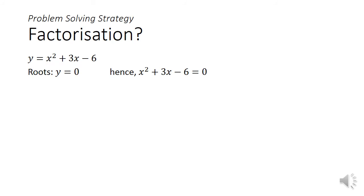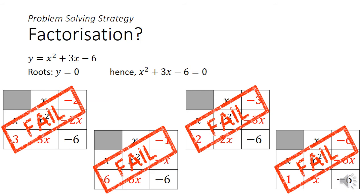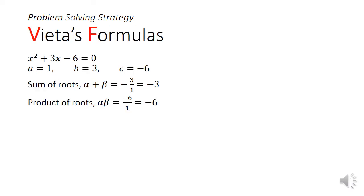A typical strategy employed by students would be to set y equals 0 and try to solve x squared plus 3x minus 6 equals 0. However, any attempts to factorize this equation to find the roots alpha and beta will only be met by failure. It turns out there are no integer solutions to this quadratic equation. This is when we can turn to Vieta's formulas. From the coefficients, we can get a equals 1, b equals 3, and c equals negative 6. This gives us a sum of roots alpha plus beta to be negative 3, and the product of roots alpha times beta to be negative 6.